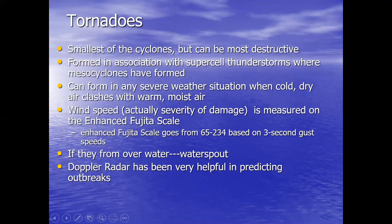Anytime Doppler radar detects what's called a hook echo inside one of these clouds, the National Weather Service will issue tornado watches. Conditions seem to be adding up for a possible tornado, so we'll hear those warnings come over the TV or radio. If a funnel cloud comes out of the cloud, then a tornado warning will be sounded.